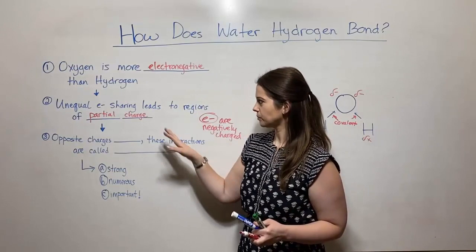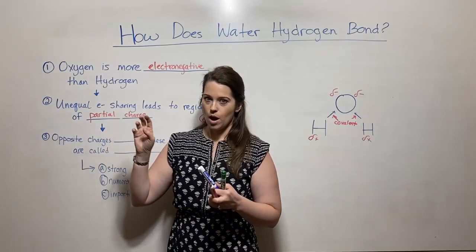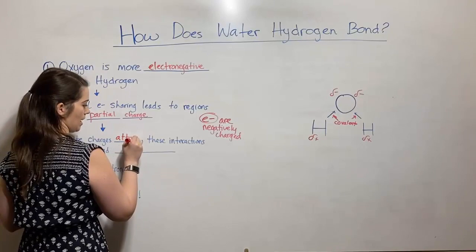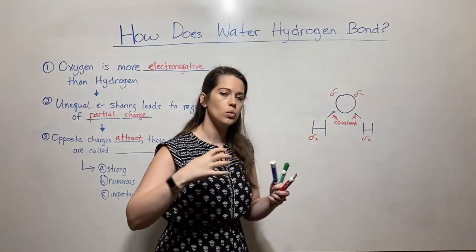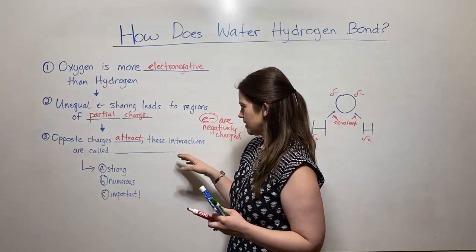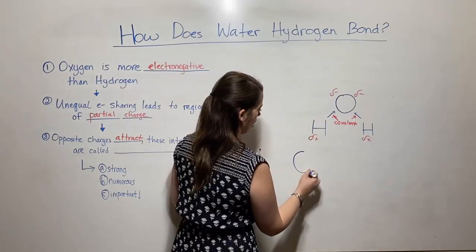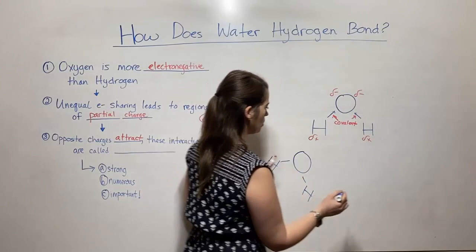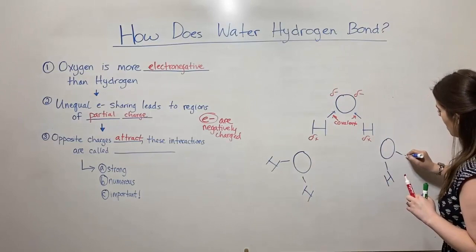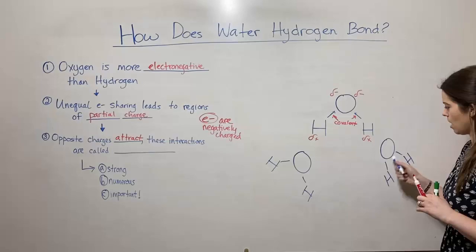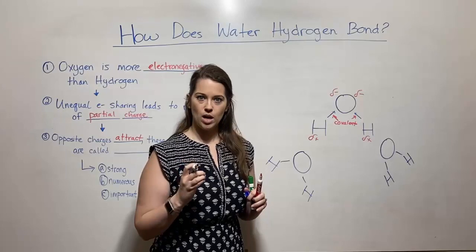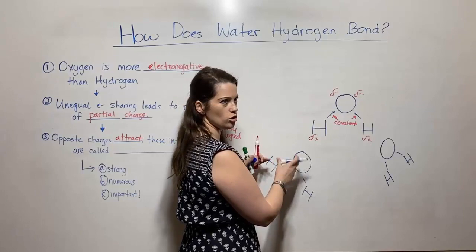Now, opposite charges attract. I'm not talking about these charges attracting within the same molecule — I'm talking about between two different water molecules. These interactions between opposite charges occur between different water molecules. While I draw some additional water molecules, I want you to understand that the covalent bonds in all of these — the bonds joining oxygen and hydrogen — are what are known as intramolecular bonds, meaning within a molecule, between two atoms of the same molecule.